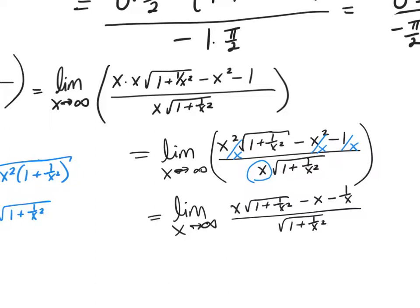Now I'm going to do direct substitution and put in infinity. As x goes to infinity, the 1/x² portion goes to zero, the 1/x portion goes to zero — so those terms drop out.